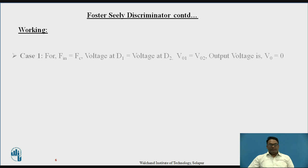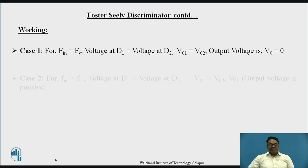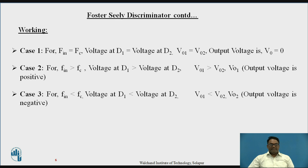For the working, we consider three cases. In Case 1, Fn is equal to Fc. Hence, the voltage at D1 equals the voltage at D2. Therefore, the two voltages across the RC circuit are equal, and the output is equal to zero.